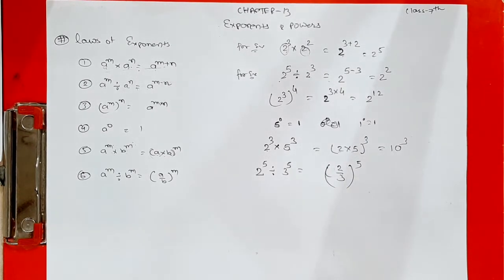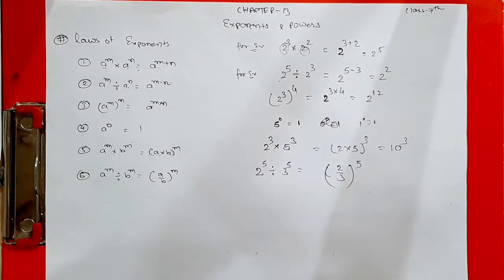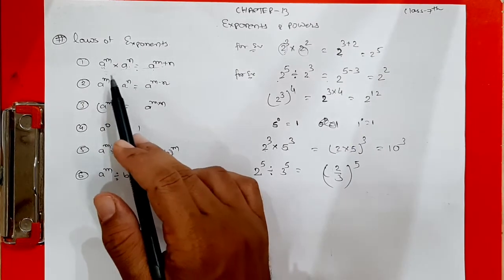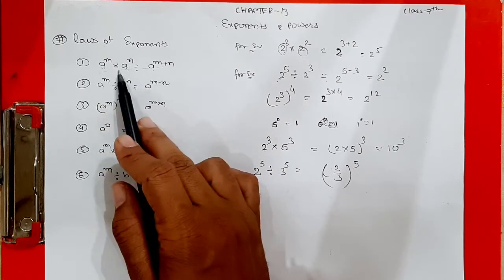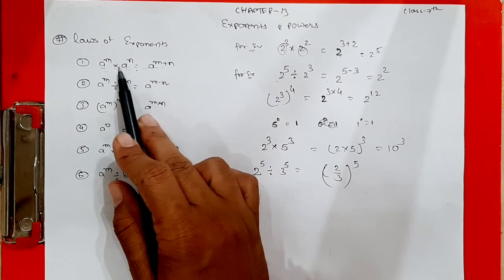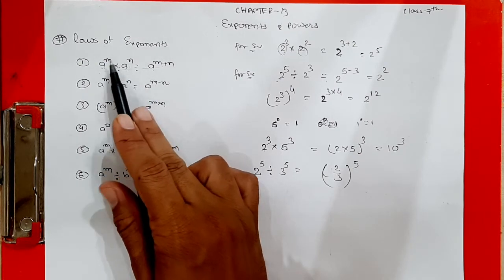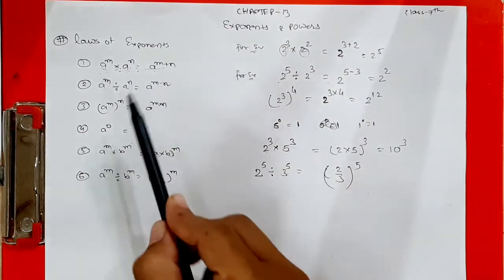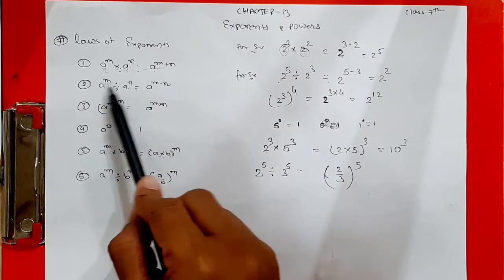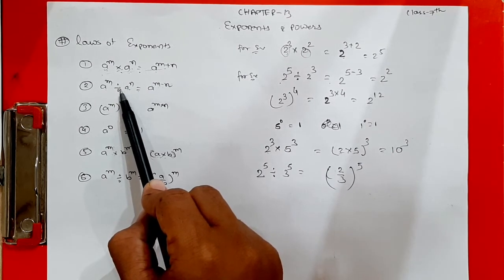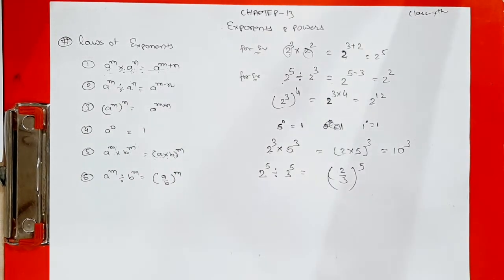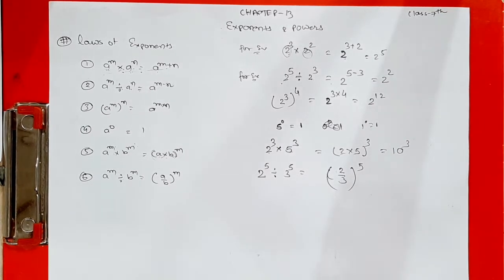All 6 rules must be memorized well before we can solve the exercise. Rule 1: if both bases are the same and the sign is multiplication, add the powers. Rule 2: if bases are the same and the sign is division, subtract the powers.